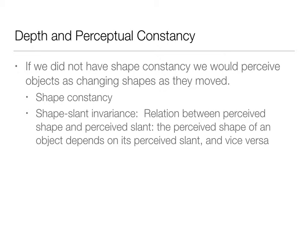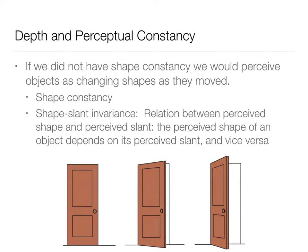If we didn't have these constancies, it would really cause problems. We also have shape constancy and shape-slant invariance. This is the idea that objects don't change shape just because they're at different depths and orientations. When we open a door, the retinal image changes shape even though the object doesn't change shape. We still perceive the object as the same size and shape regardless of the slant.